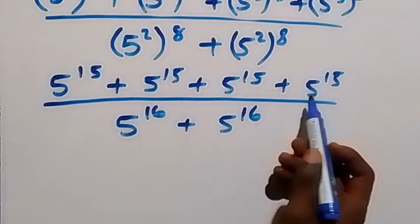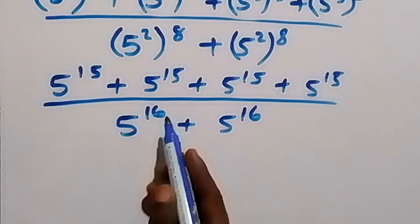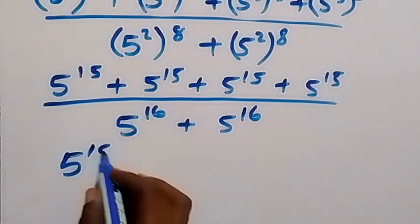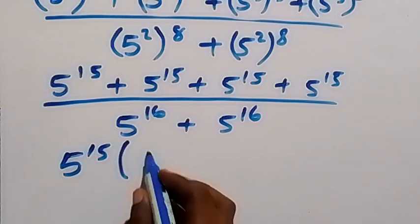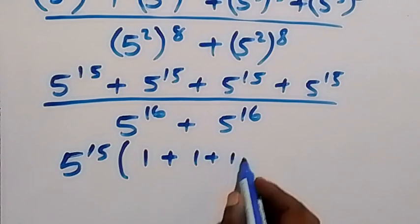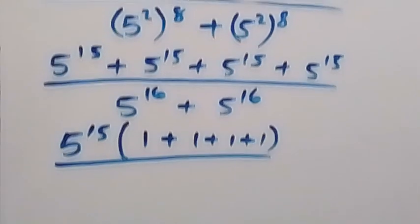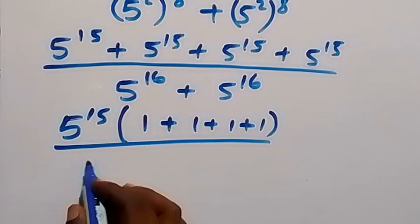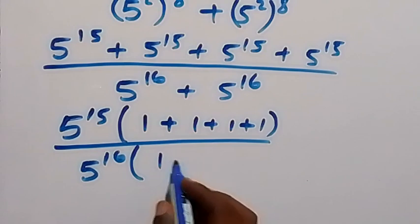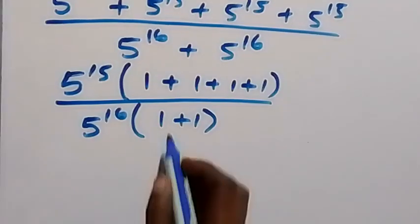We can see that we have 5 raised to power 15 added up 4 times. So we factor 5 raised to power 15 out of a bracket, giving us 1 plus 1 plus 1 plus 1. Divided by, we factor 5 raised to power 16 out, giving us 1 plus 1.